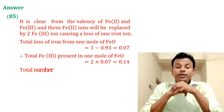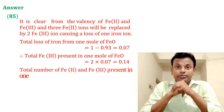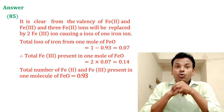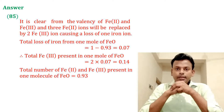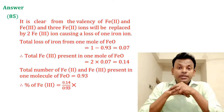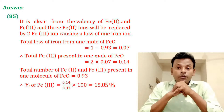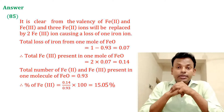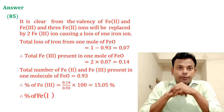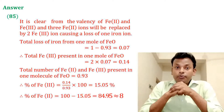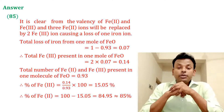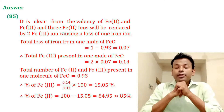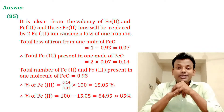Total number of Fe²⁺ and Fe³⁺ ions present in 1 mol FeO = 0.93. Therefore, percentage of Fe³⁺ = 0.14/0.93 × 100 = 15.05%. Therefore, percentage of Fe²⁺ = 100 − 15.05 = 84.95% ≈ 85%. So the answer is 85.